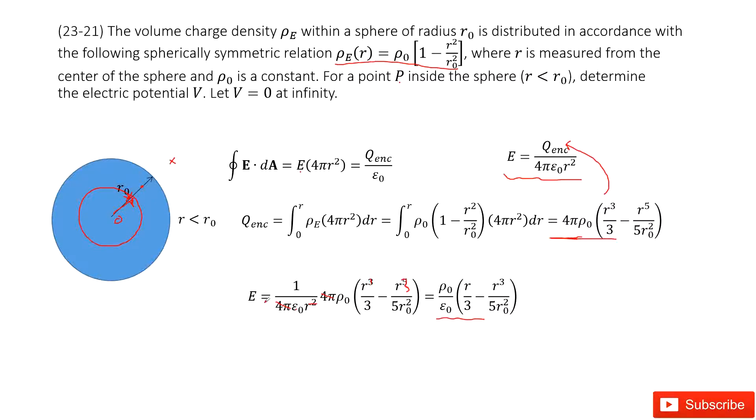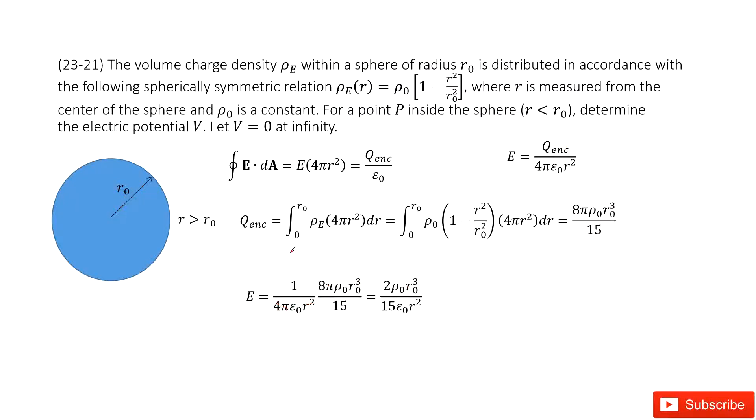So the electric field inside is done. And then we look at the electric field outside. If we still draw a Gaussian surface, the electric field times Gaussian surface equals enclosed charge divided by ε₀. So we write the electric field as a function like this one.